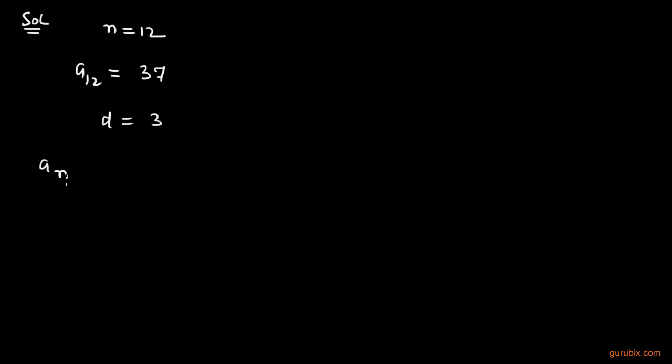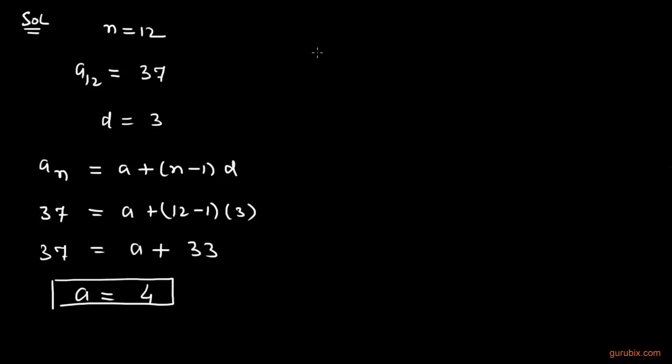The general term is aₙ equals a plus (n-1) into d. What is aₙ? That is 37. We have n is given as 12 and d is 3. This equals a plus 11 into 3 means 33. Therefore, a equals 4, and we have to calculate the sum of first 12 terms.